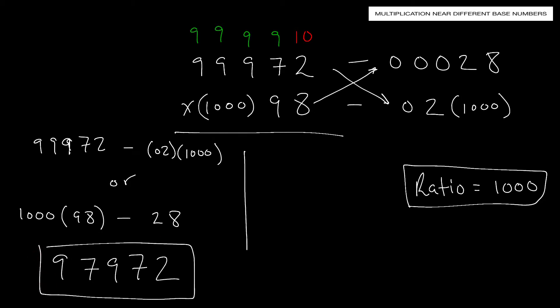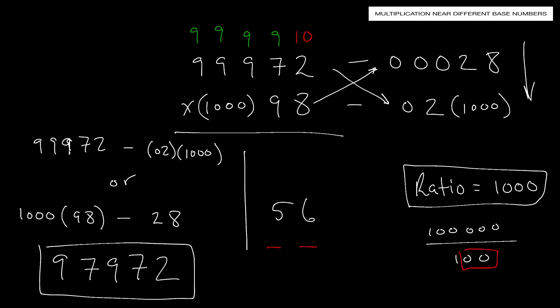For the right-hand side, multiply the two deficiencies: 2 times 28 gives 56. The smaller base (100) has 2 zeros, so 2 digits are allowed on the right-hand side. Our final answer is 9,797,256 — that is, 97,972 followed by 56.